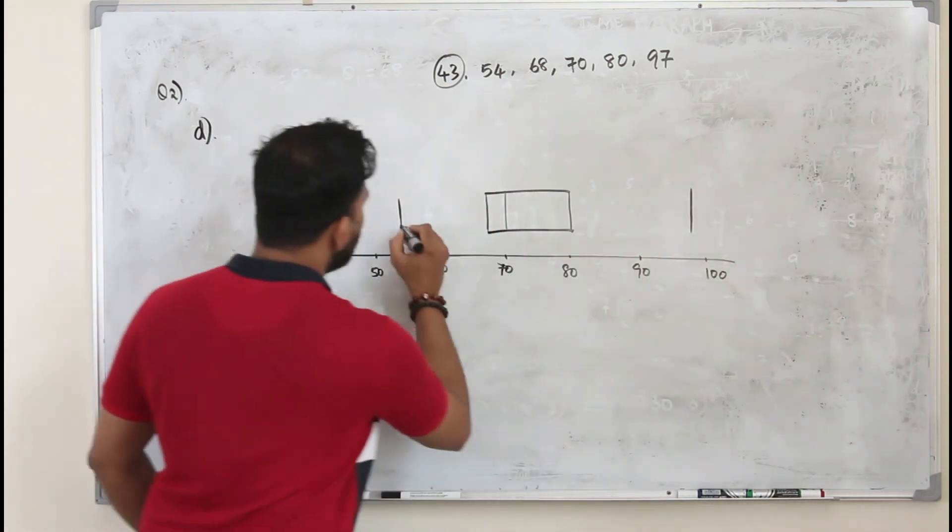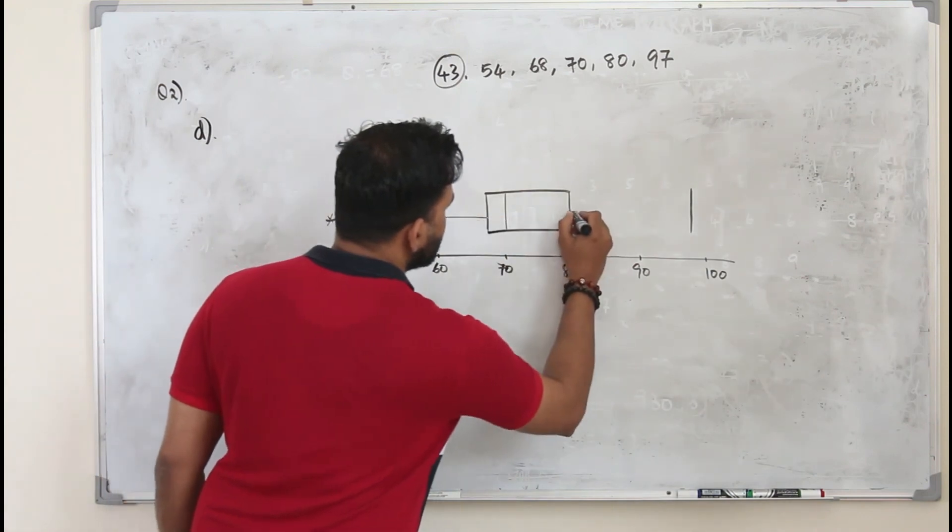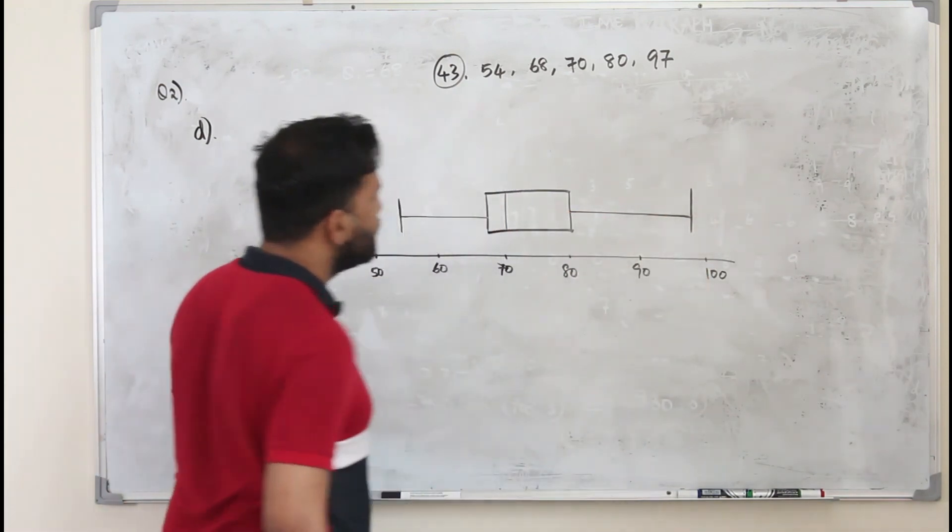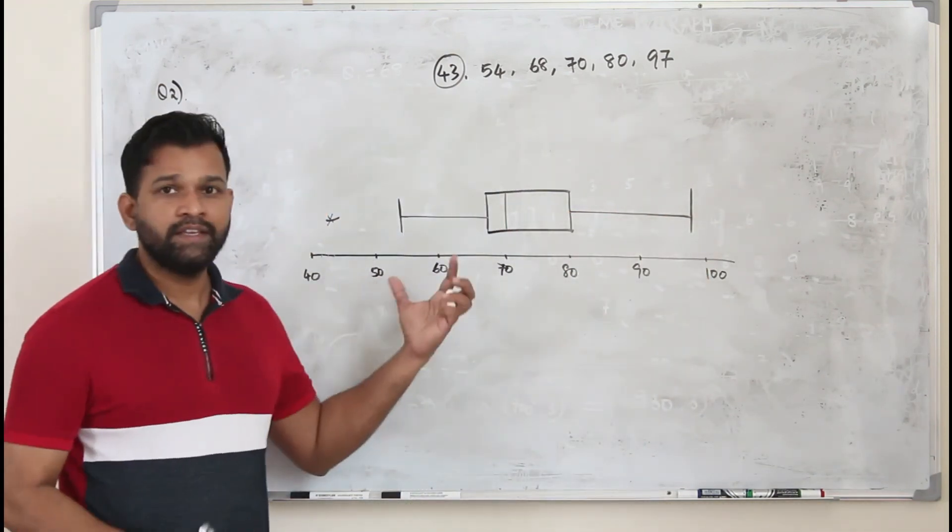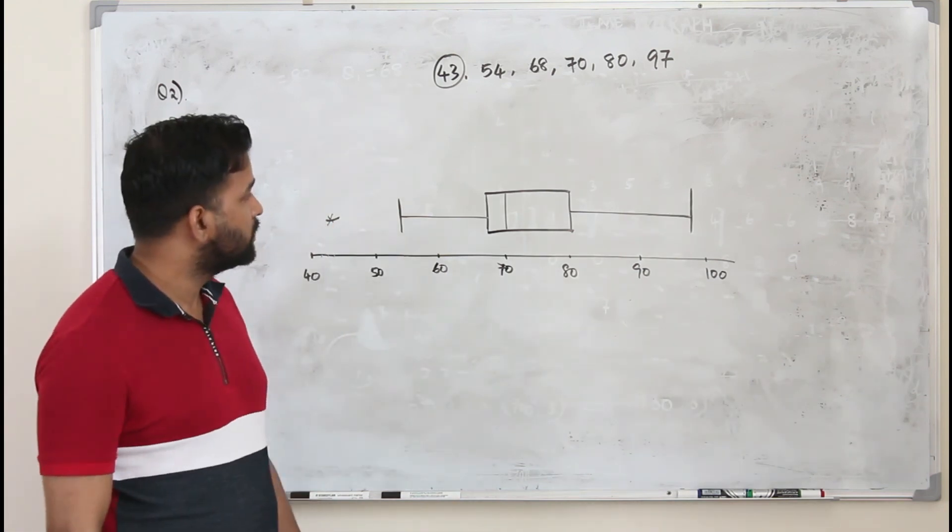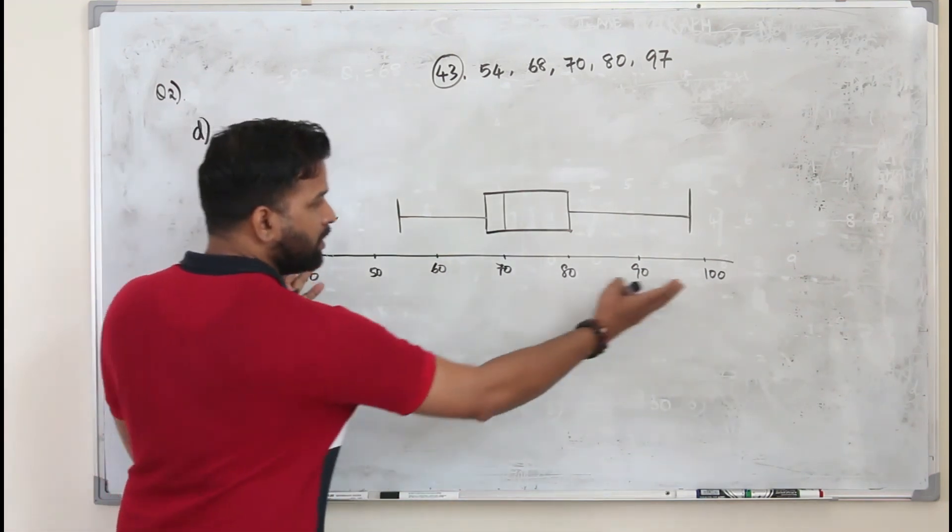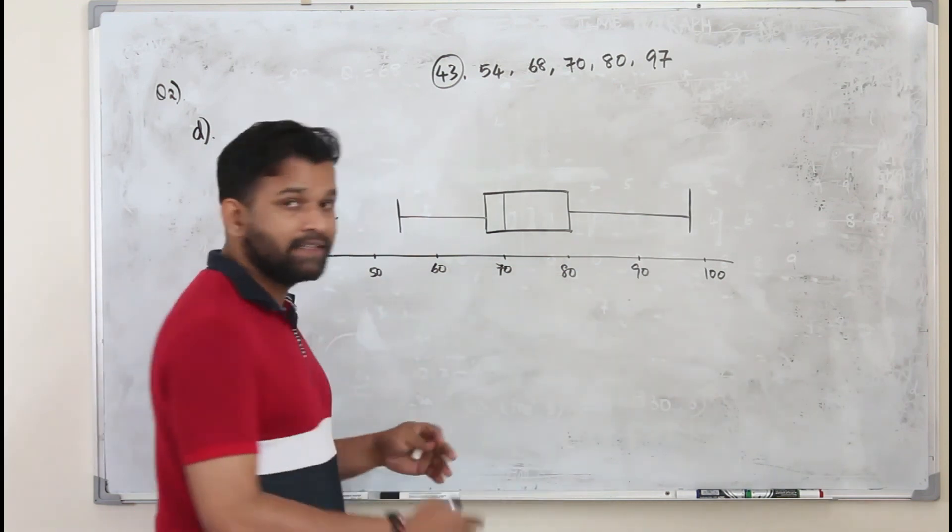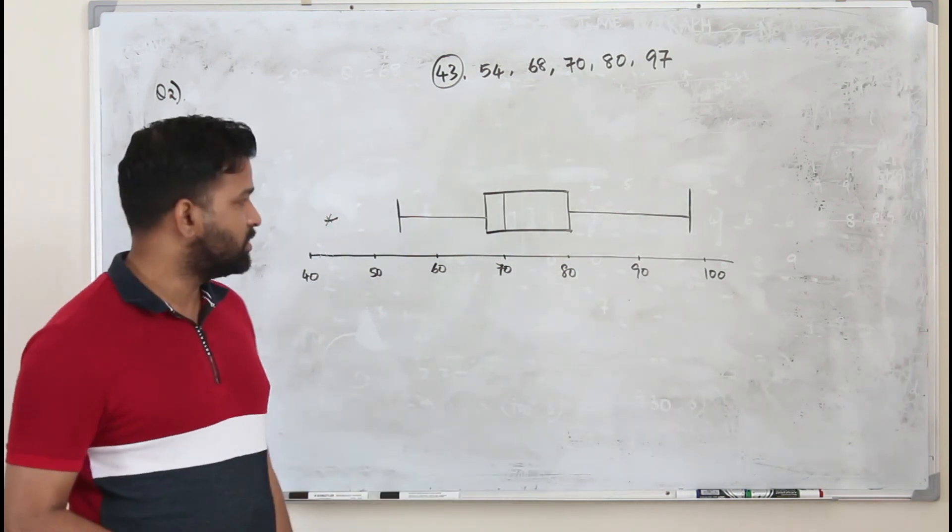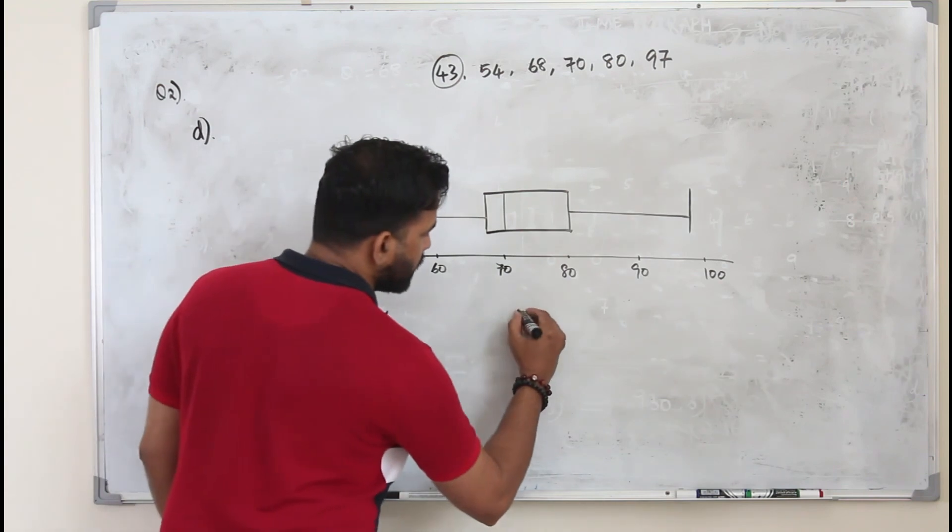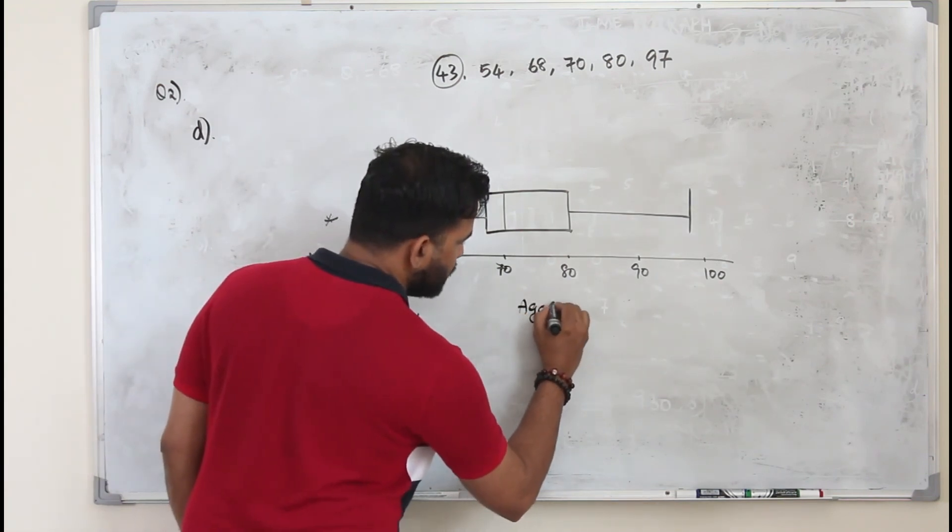Highest value is 97. These two are whiskers. So just draw a line here. This is the box and whiskers plot. Now here you have to label the units actually. This 40 to 100 is the ages of residents in a care home. So you can just put age here. Ages.